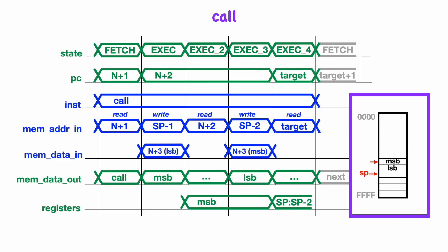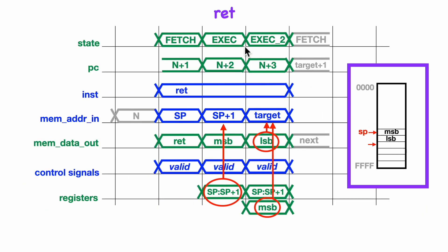Now let's take a look at the return instruction. It's a single opcode byte, but we'll need two extra cycles to read two bytes from memory. It will read the two bytes at the top of the stack and then jump to the address given by those two bytes. Looking at the timing diagram for the return instruction, we see those two extra cycles used to read the two bytes from the stack memory.